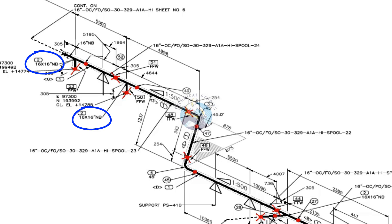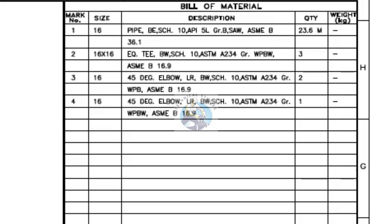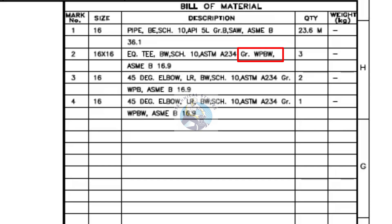Item number 2 is an equal T, butt weld, schedule 10, ASTM A234, grade WPBW. The quantity is 3. There are two primary methods for pipe manufacturing: WPB and WPBW. In WPB, W represents weldable, P stands for pressure, and B denotes grade B. In WPBW, the last W signifies welded.